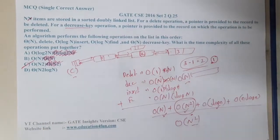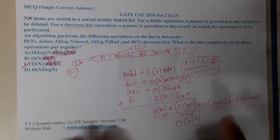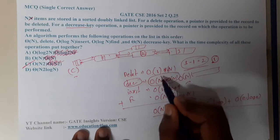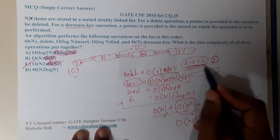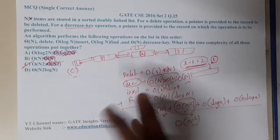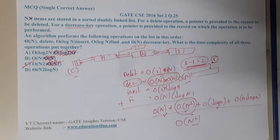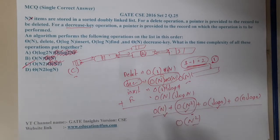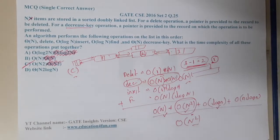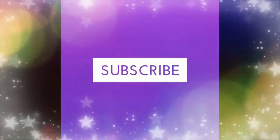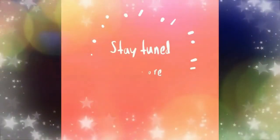So option C is the correct answer. The key thing to understand is that the decrease-key operation takes O(n squared) because when you decrement one value, it automatically un-sorts the list and you need to re-sort it. That is the main reason it goes up to n squared. I hope everyone got a clear idea on this. In the next lecture, let us continue with the next question. Thank you, thanks for watching — like, share, and subscribe for more videos like this.